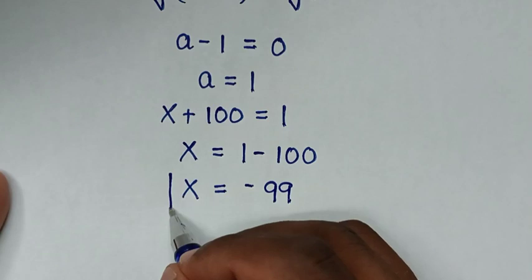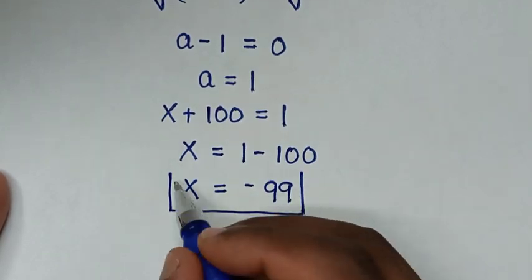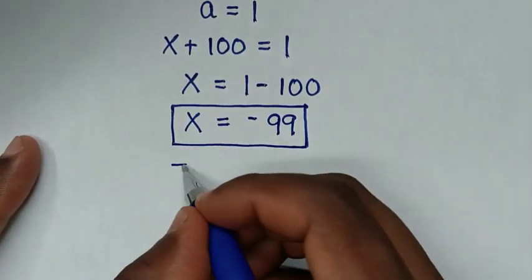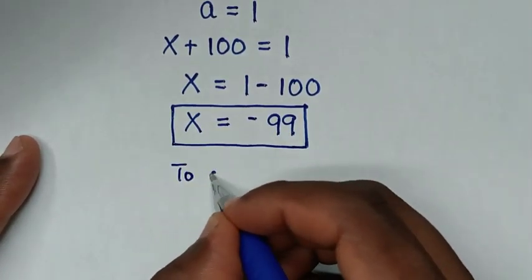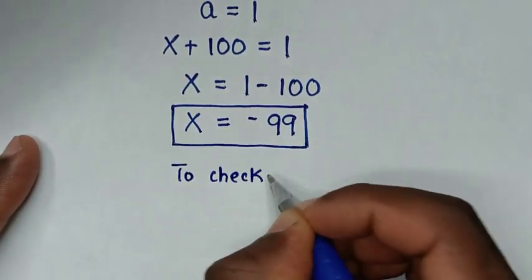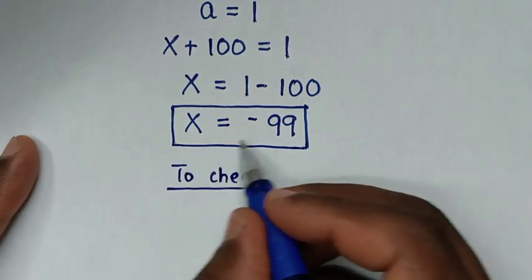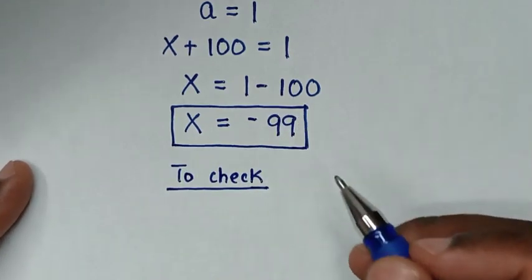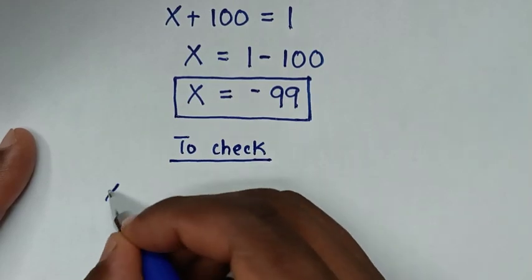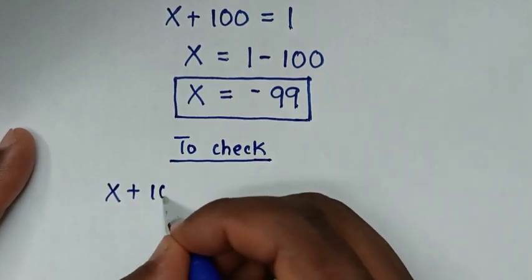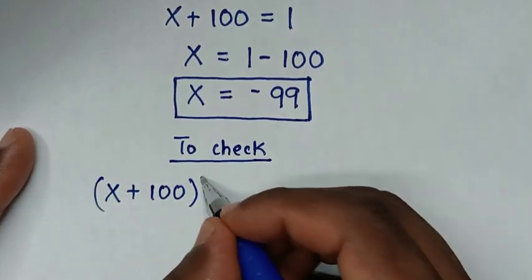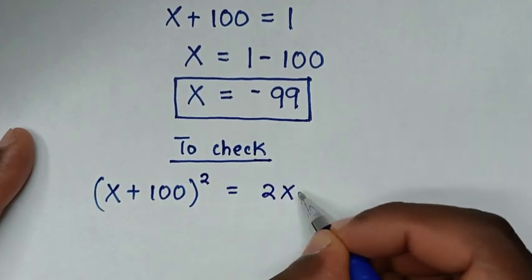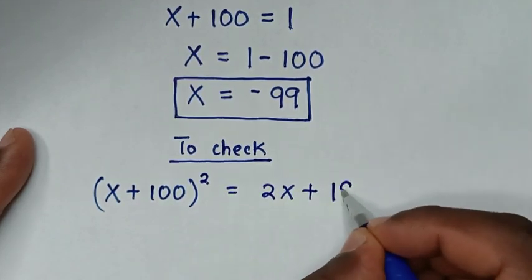Therefore x = -99 is our final answer. Now let's check if x = -99 is correct by substituting back into the original equation (x + 100)² = 2x + 199.